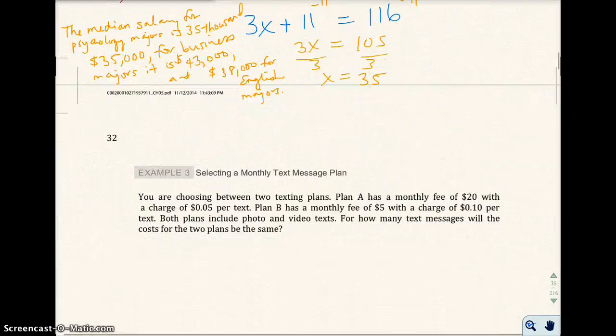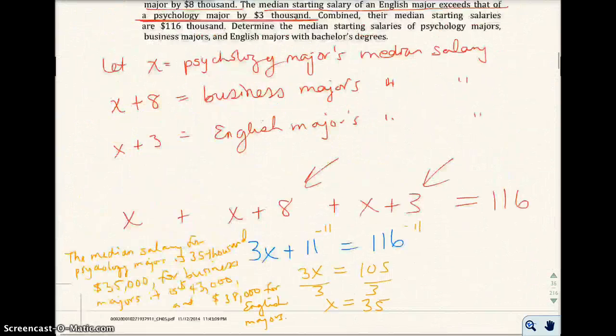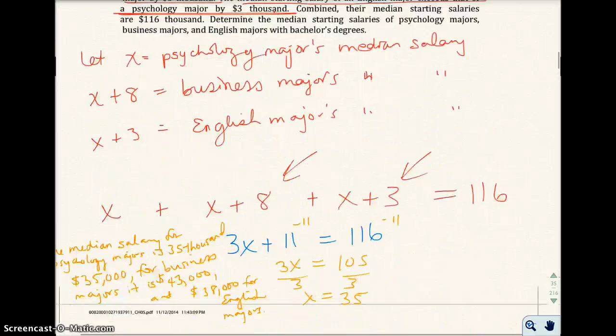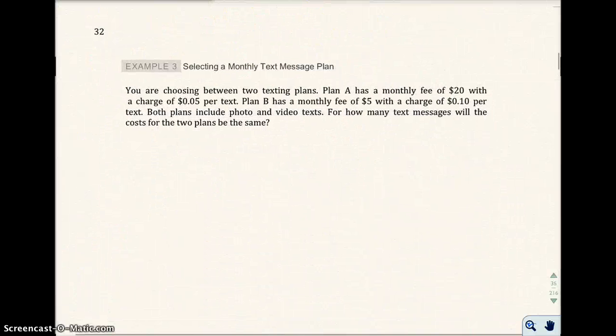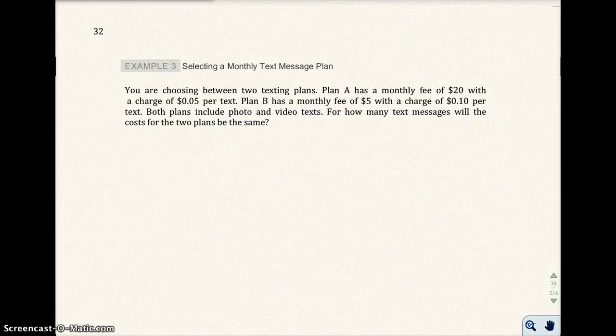Let's go on to the next example. You're going to notice I skipped example 2, now I have example 3. This is just based on the textbook we're using. Here in example 3, I have selecting a monthly text message plan. I know this might not be applicable now because a lot of cell phones just charge you a one-monthly fee for unlimited, but this cell phone company has two texting plans and it's not an unlimited plan.